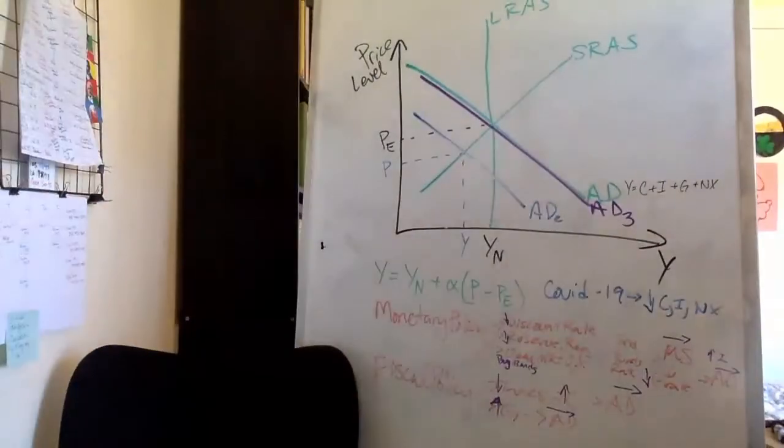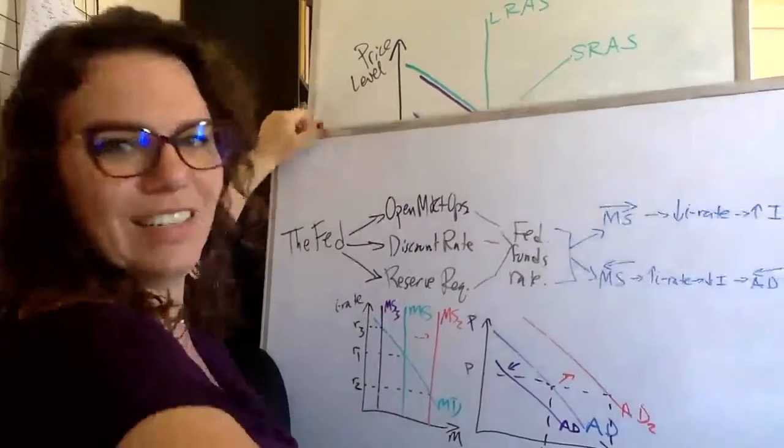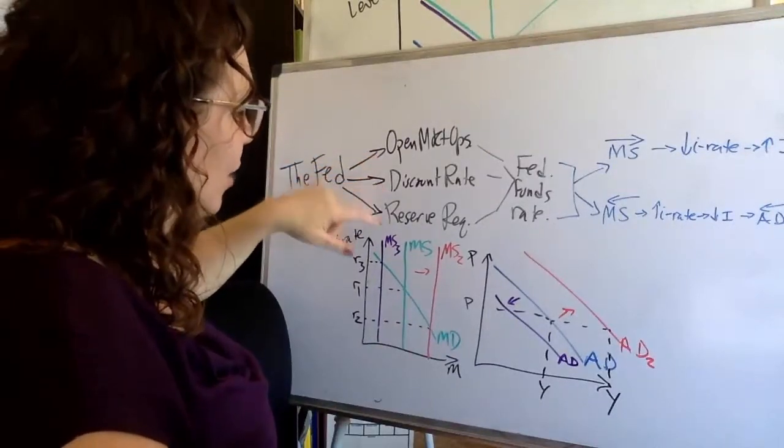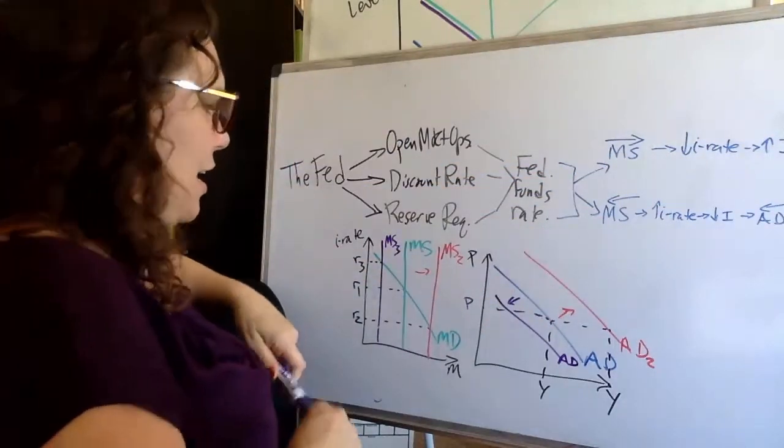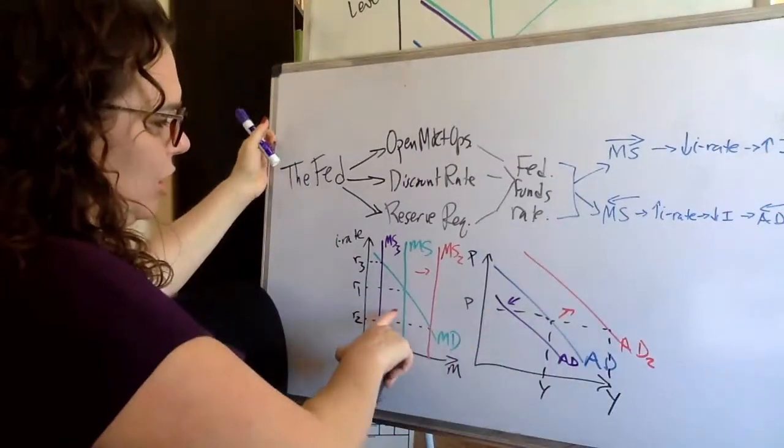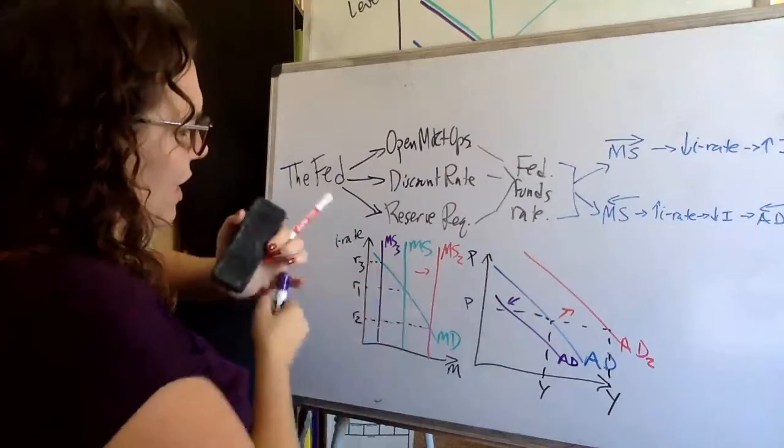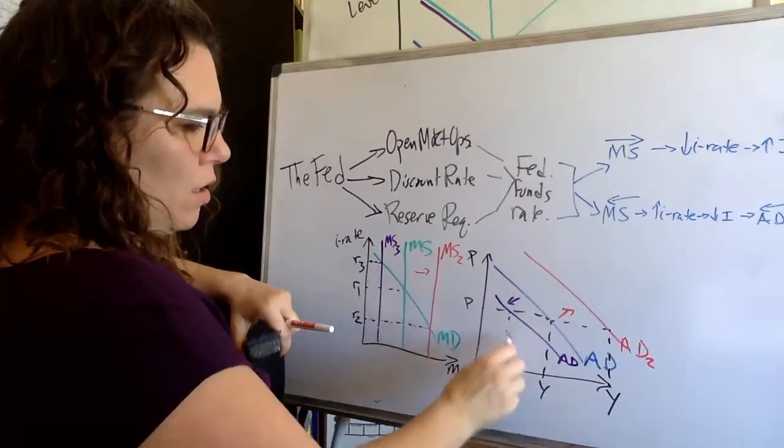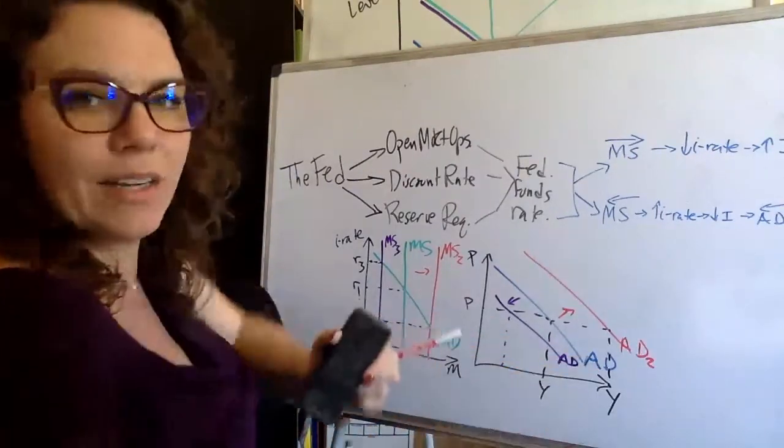And that's part of why this is confusing is because we have to always keep money demand and supply in mind also. But that's the basics of aggregate demand and aggregate supply. The Fed can use open market operations, discount rate, or reserve requirement to target the federal funds rate to shift money supply in or out to raise or lower the interest rate to affect aggregate demand. The money supply shifts out, we're going to see the interest rate go down. If the money supply shifts in, the interest rate is going to go up. Higher interest rates mean lower output or lower price level, and lower interest rates mean higher levels of output.